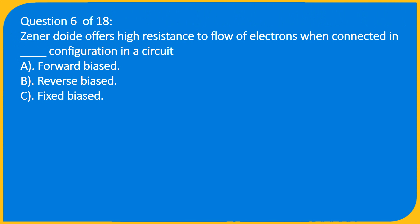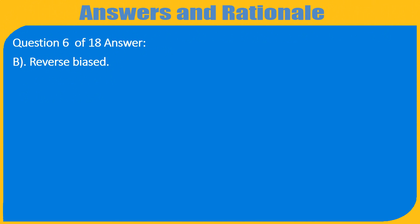Question 6 of 18: Zener diode offers high resistance to flow of electrons when connected in underscore configuration in a circuit: A. Forward biased, B. Reverse biased, C. Fixed biased. Question 6 of 18 Answer: B. Reverse biased.